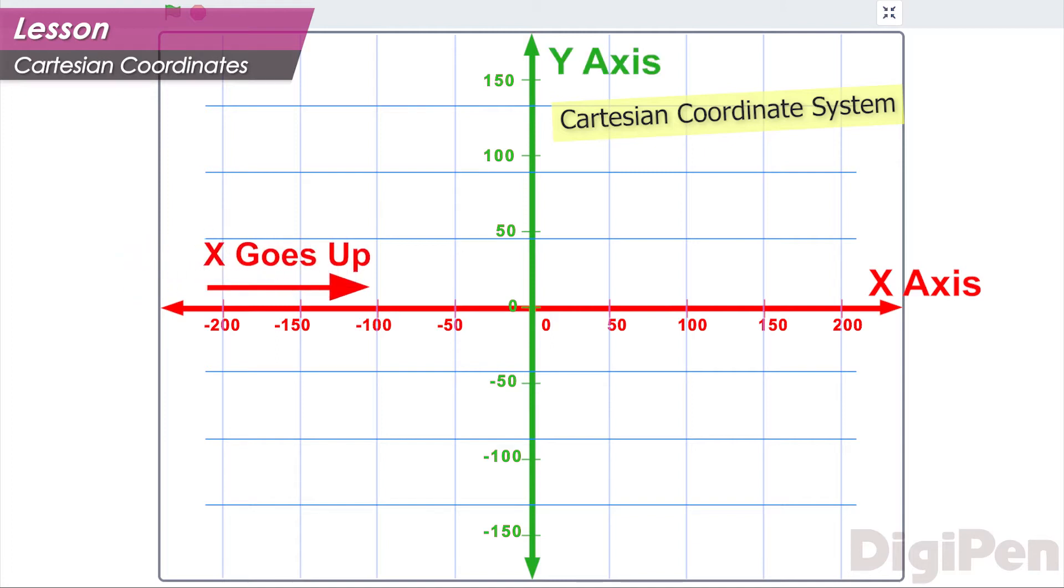If you walk to the right in this space, your x-coordinate goes up, and if you walk to the left, it goes down. If you walk upward, your y-coordinate goes up, and if you walk downward, your y-coordinate goes down.